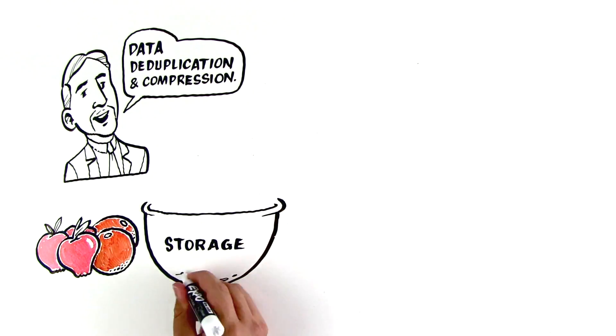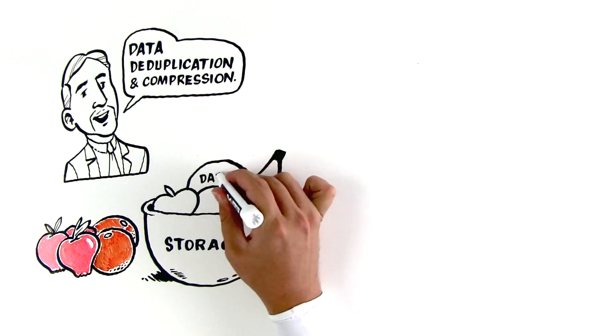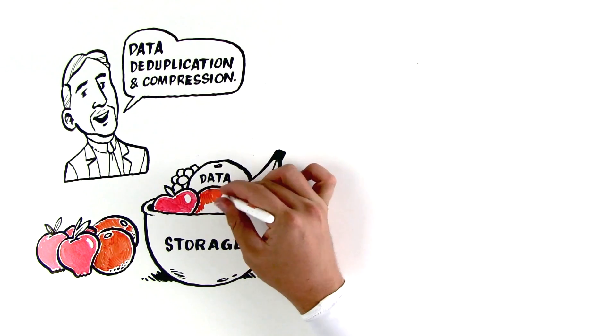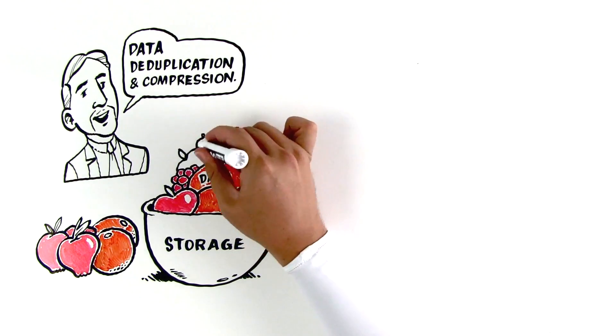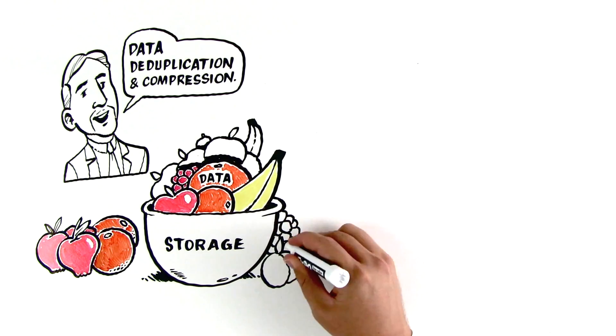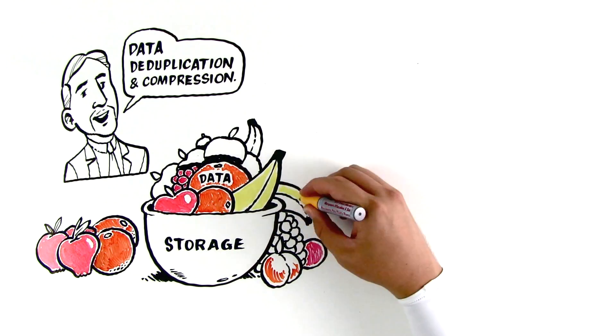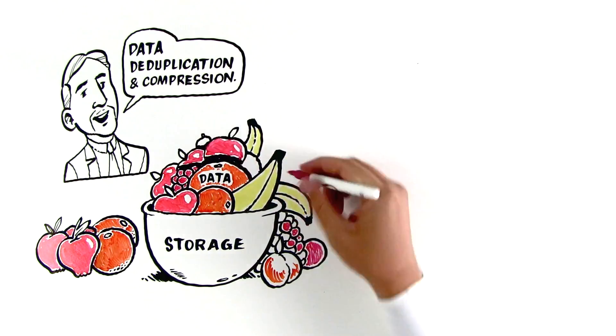Imagine your storage environment as a basket full of different types of fruit, or data. All those different types of fruit have to fit inside the basket, just like data in your storage environment. But as your data grows, you need a larger basket, or a server array to contain it.